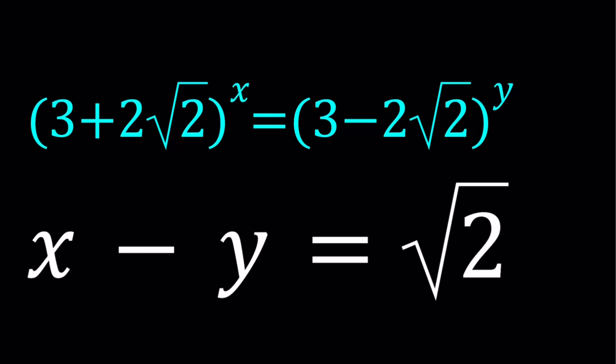So we have this equation (3+2√2)^x = (3-2√2)^y, and also x - y = √2. We're going to be finding the x and y values and see what this looks like.